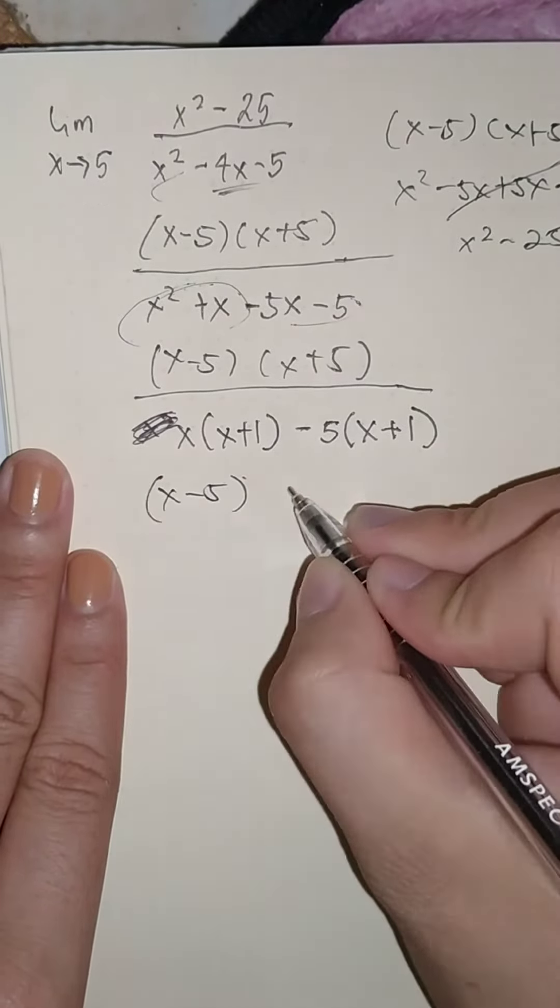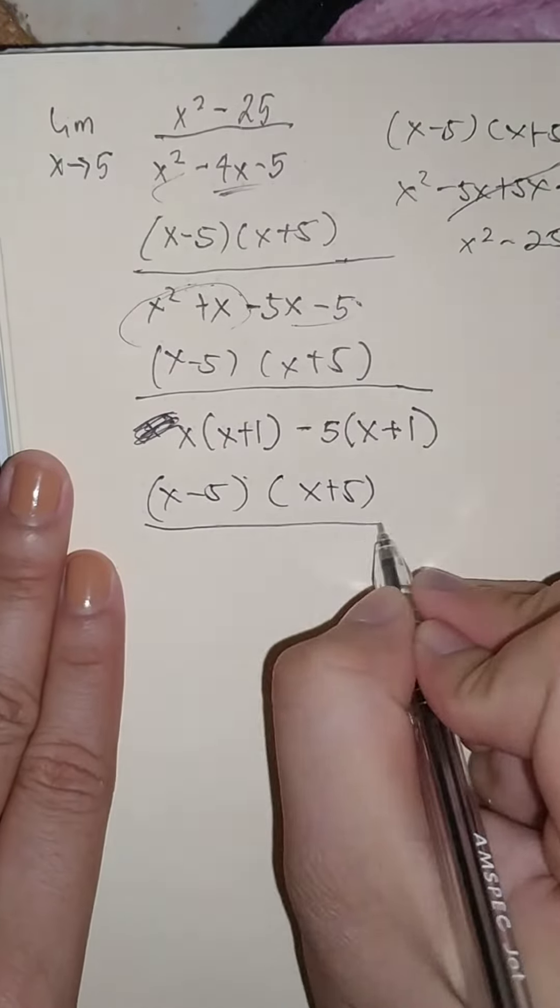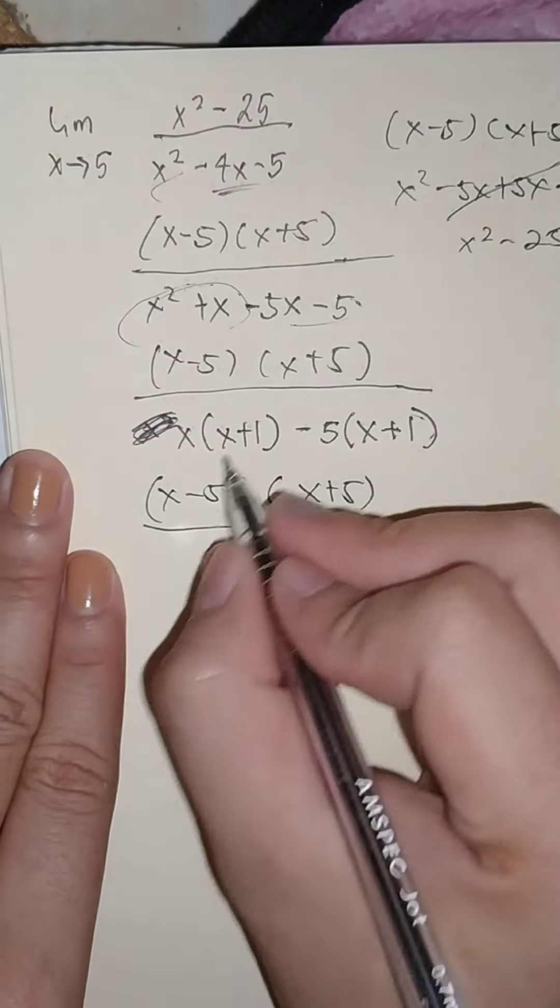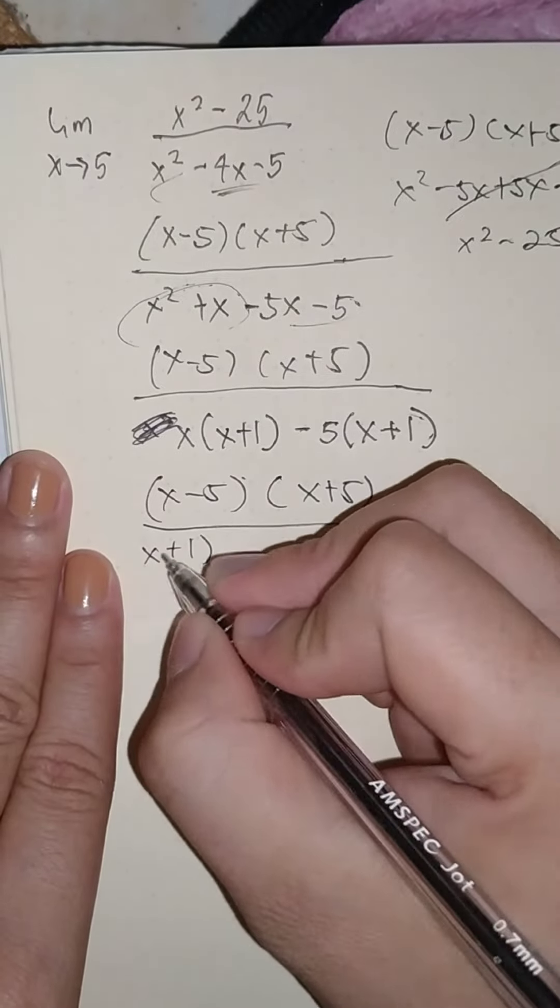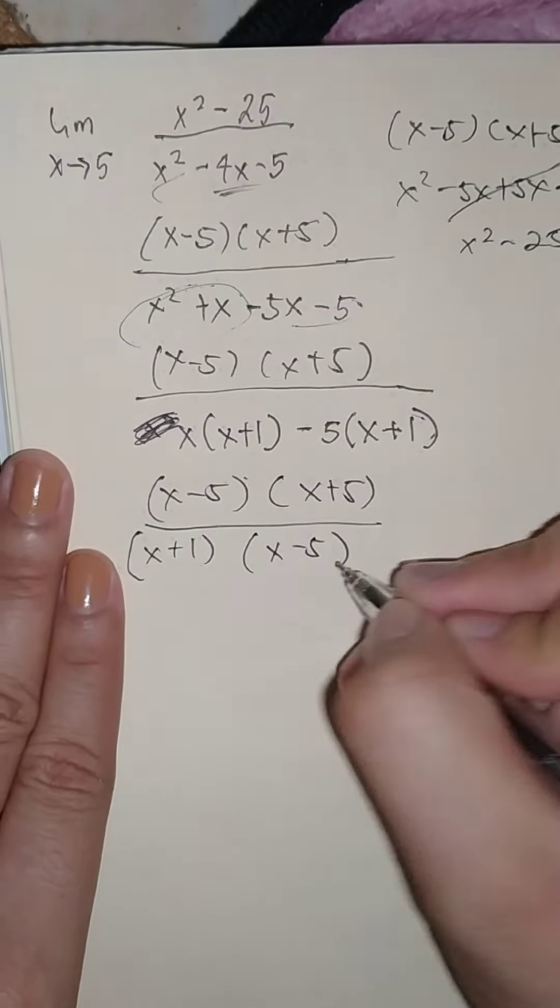All over—factoring x plus 1, we have x plus 1 here, x minus 5 here. So we can cancel this one out.